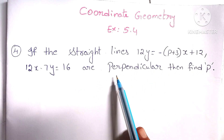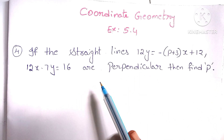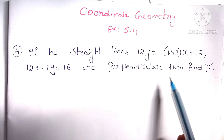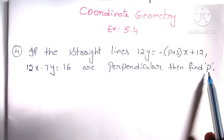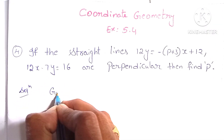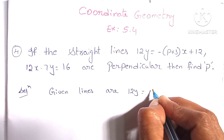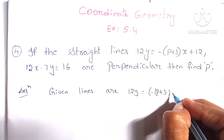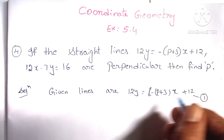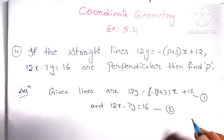Here two straight lines are given, and also given that the two straight lines are perpendicular. Perpendicular means the product of the slopes of these two lines is equal to minus 1. That is m1 into m2 is minus 1, and we have to find the value of p. Given lines are: 12y equal to minus of p plus 3 into x plus 12 — this is line 1 — and 12x minus 7y equal to 16 — this is line 2.